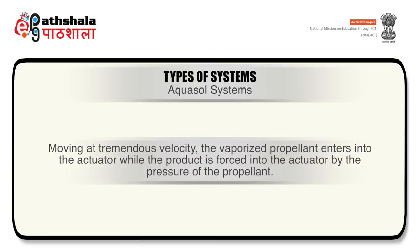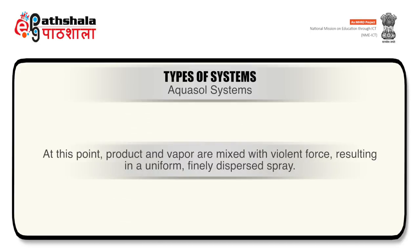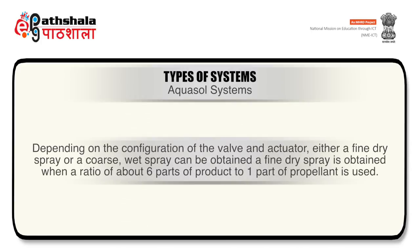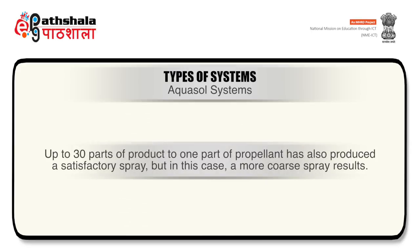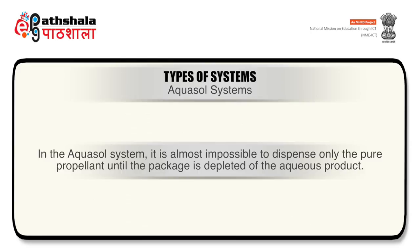Moving at tremendous velocity, the vaporized propellant enters into the actuator while the product is forced in by the pressure of the propellant. Product and vapor are mixed with violent force resulting in a uniform, finely dispersed spray. Depending on the configuration of the valve and actuator, either a fine dry spray or a coarse wet spray can be obtained. A fine dry spray is obtained when a ratio of about 6 parts of product to 1 part of propellant is used; up to 30 parts of product to 1 part of propellant has also produced a satisfactory, though more coarse, spray.